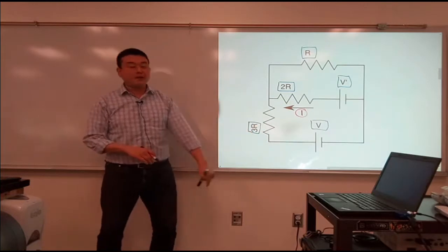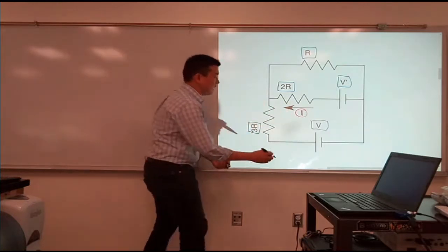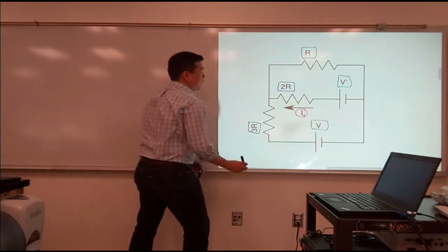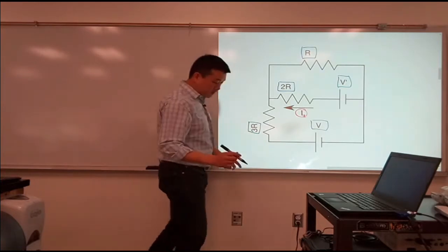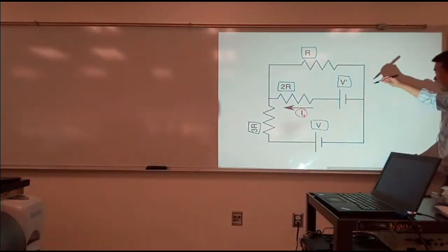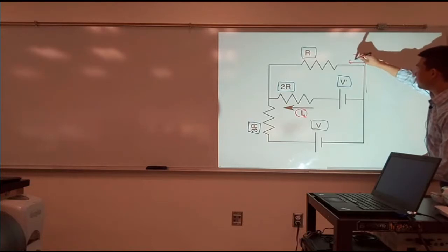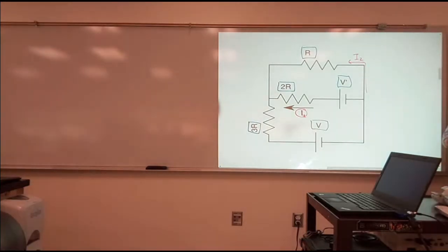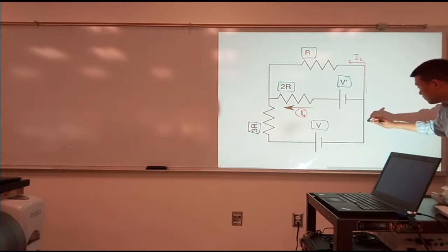So here's one current, let me label this I1. And there's going to be another current flowing through this branch. Let me label that I2. And there might be another current flowing through this branch here. Let me label that I3.